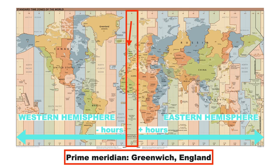Local time around the world is determined in relation to the prime meridian, which goes through Greenwich, England. Notice the degrees of longitude at the bottom of the map — the prime meridian is at zero degrees.